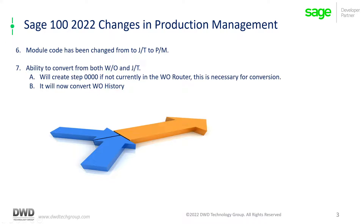It has the ability to convert both from work order and prior existing production management installs. Two nice things they've added: in prior versions, if your router did not have a beginning step of 000, we had to manually create those in the router tables before conversion. Now, the conversion process will automatically create that step 000, which is a requirement in production management — templates, previously called routers, must have step 000 as the first step. It will also now convert work order history to production management, which was not done in prior versions.